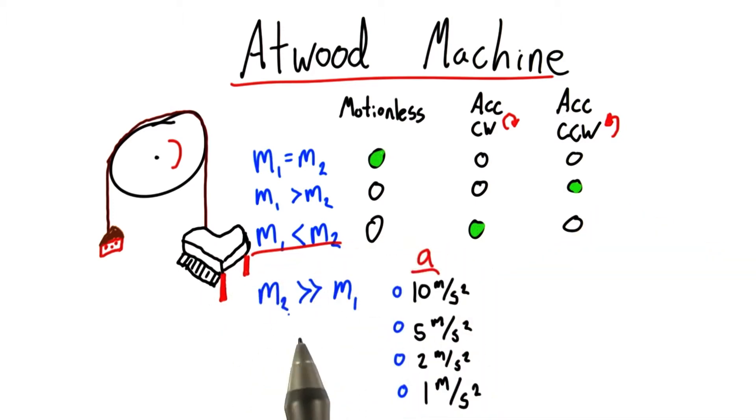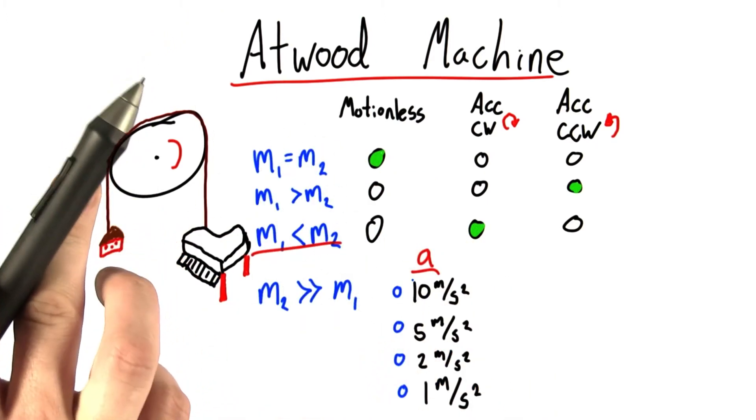So in this situation, I want you to tell me: what do you think is the best estimate for how quickly this piano will accelerate downwards, and therefore how quickly the pie will accelerate upwards?